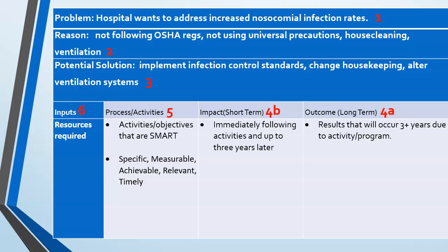We're going to talk about the logic model, and when you come to class you'll work on it in your groups. At the top of the logic model it says 'the problem,' and the problem we'll use in class is that the hospital wants to address the increased risk of infections that people get while in the hospital. The second line asks you to list every possible reason you can think of — for example, hospital staff might not be following OSHA regulations, they may not be using universal precautions, housekeeping may be contracted out and have issues, or perhaps the ventilation system is circulating viruses or germs.